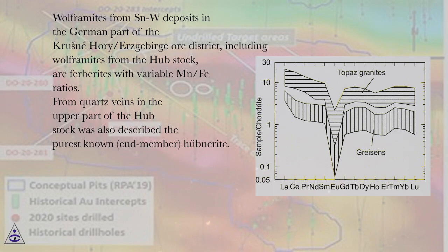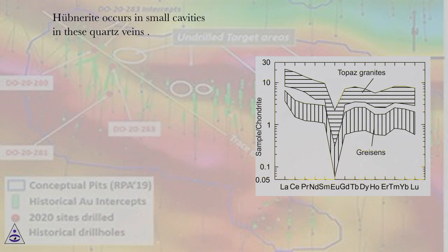From quartz veins in the upper part of the Hubstock was also described the purest known end member hubnerite. Hubnerite occurs in small cavities in these quartz veins.